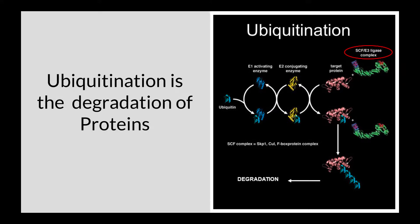ASB9 acts as the E3 ubiquitin ligase subunit in the ubiquitination process. This means that they are proteins that are used to mark other proteins for degradation.